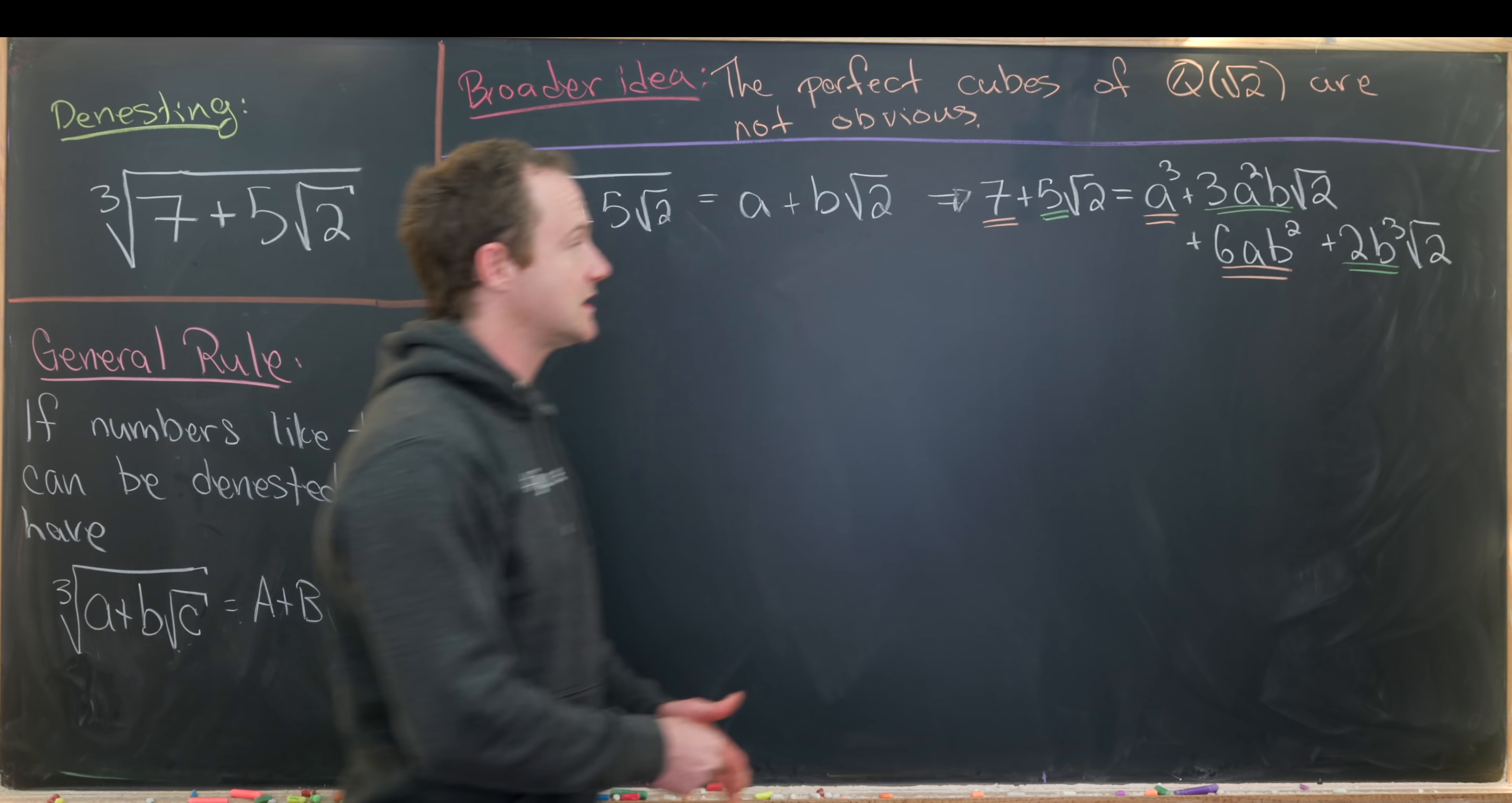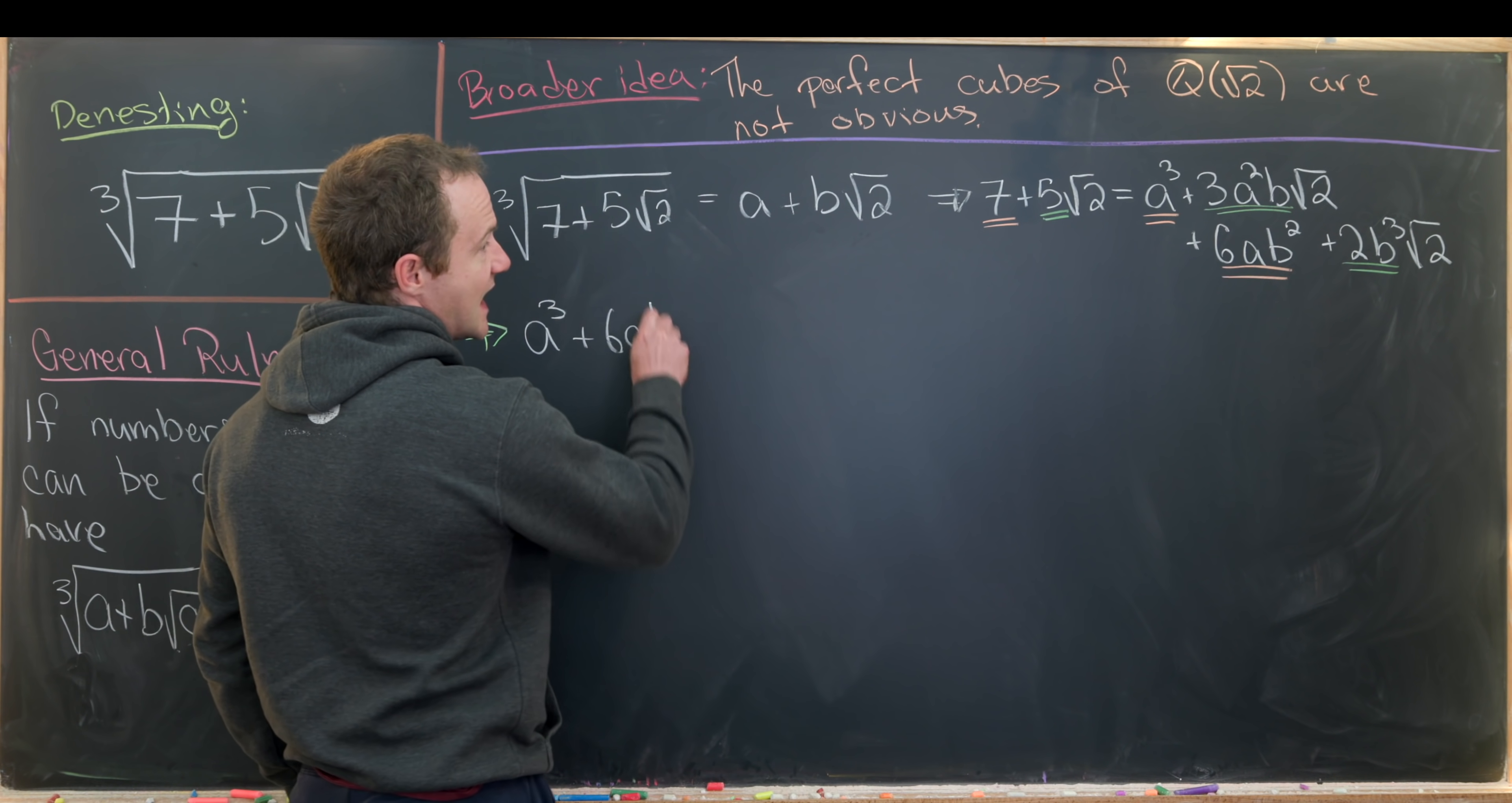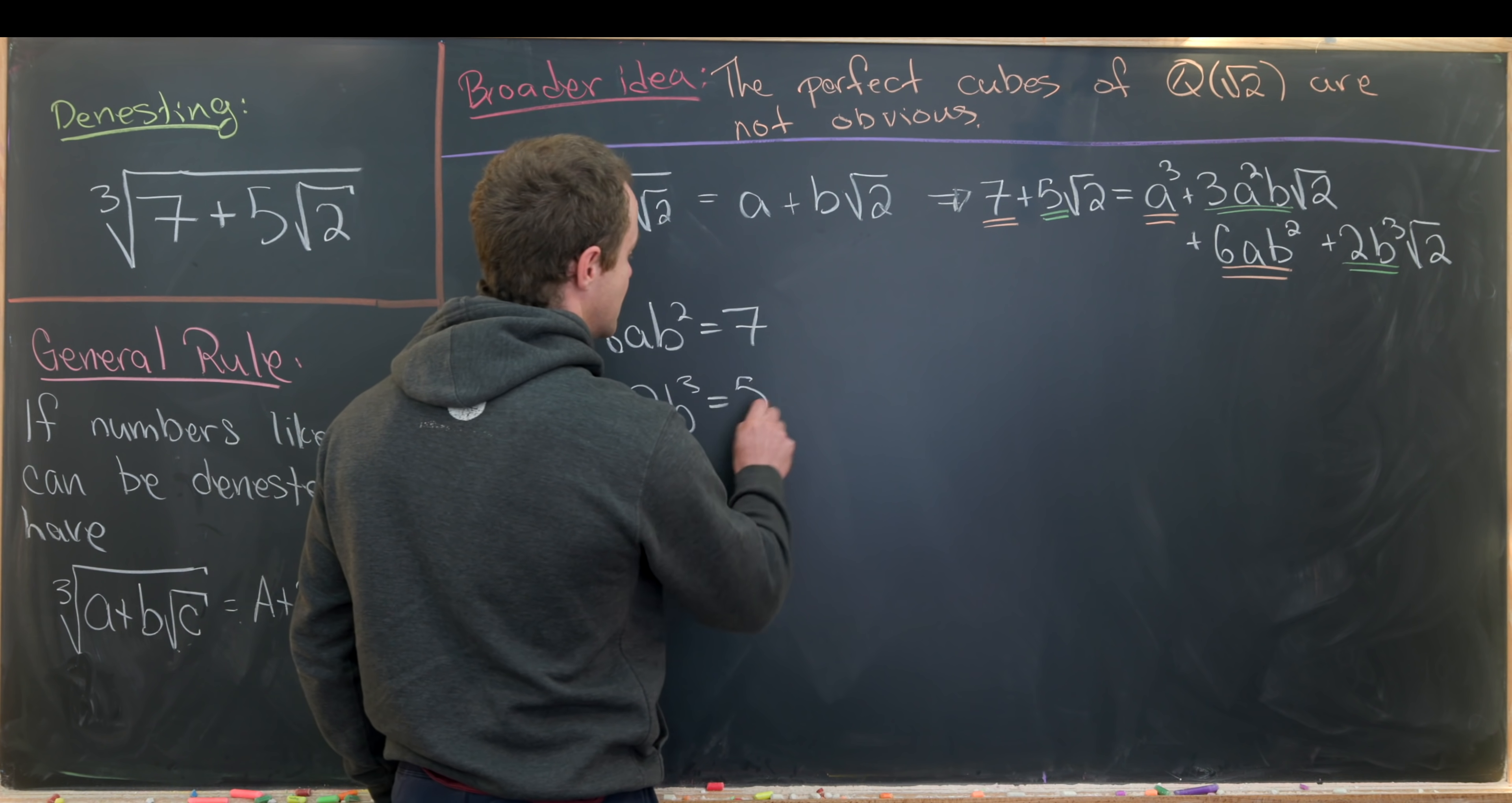So that takes this single equation into a system of two equations with two unknowns. So in particular we'll have a cubed plus six a b squared equals seven. And then we'll also have 3a squared b plus 2b cubed equals five.